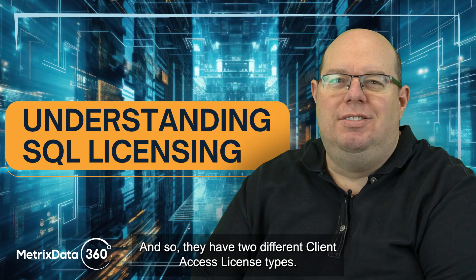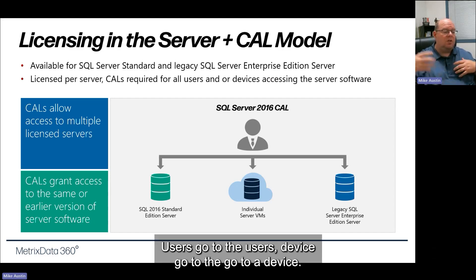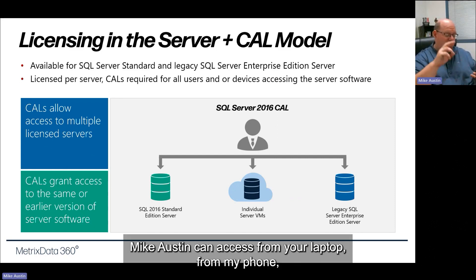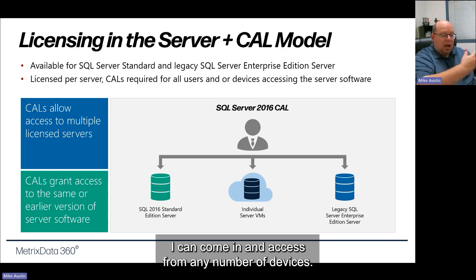There are two different client access license types: user CALs and device CALs. Users go to a user, devices go to a device. With a user CAL, a user like Mike Austin can access from a laptop, from a phone, from another PC in the office — any number of devices.